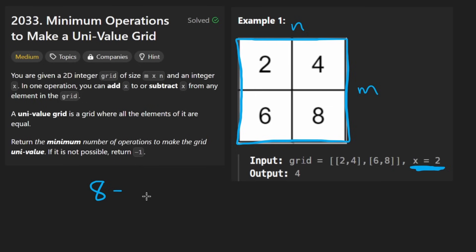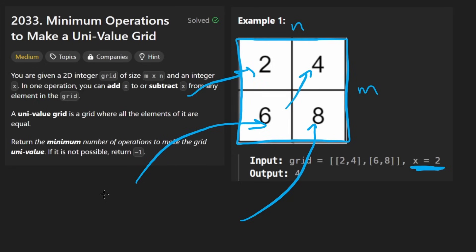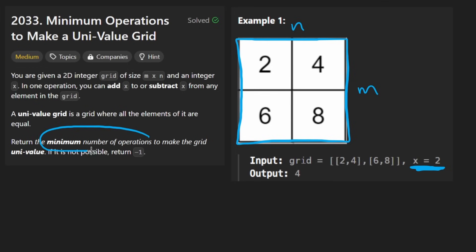To put it more generally, any number can have x added or subtracted from it y times, where y is the number of operations we choose. We do not get to choose x. Our goal is to make every single element in the grid the exact same, and we want to return the minimum number of operations to achieve this — or negative 1 if it's not possible.